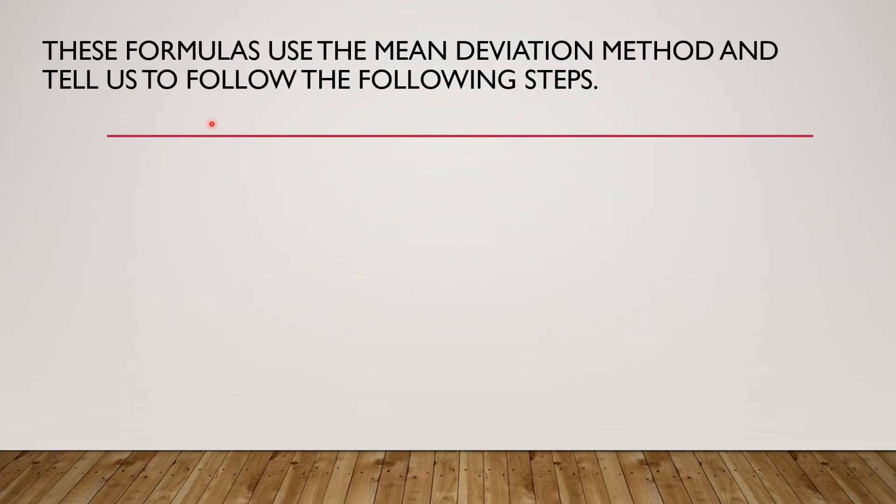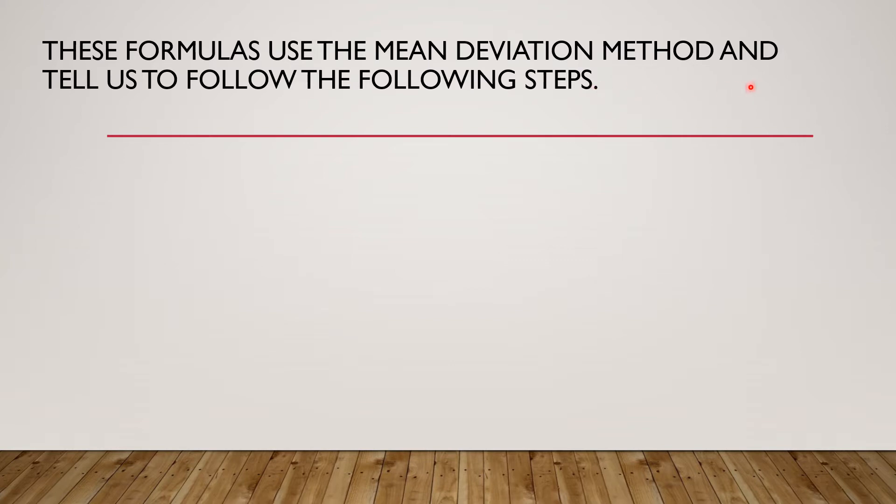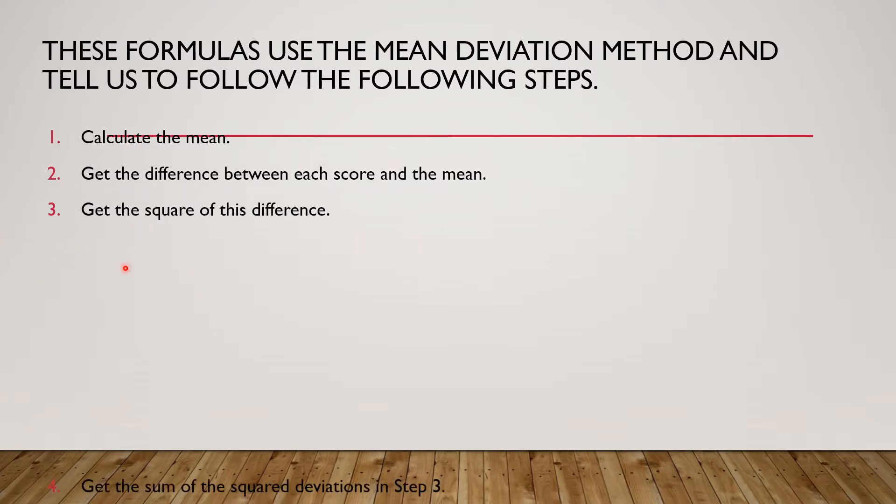These formulas use the mean deviation method and tell us to follow the following steps. Number 1, calculate the mean. 2, get the difference between each score and the mean. 3, get the square of this difference. 4, get the sum of the square deviations in step 3. And 5, divide the sum of the square differences by n minus 1, and the number obtained is called variance. Take the square root, that is the standard deviation.